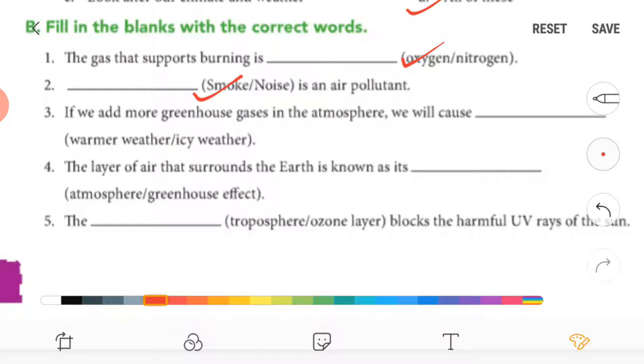The layer of air that surrounds the earth is known as atmosphere. The ozone layer blocks the harmful ultraviolet rays from sun.